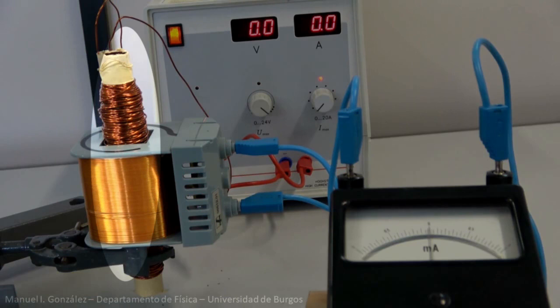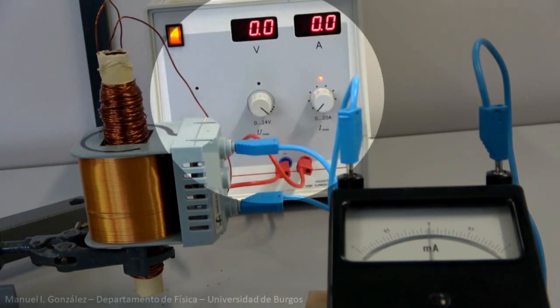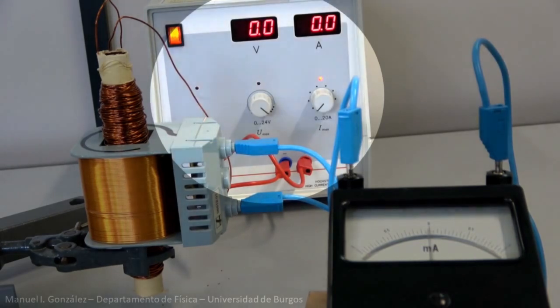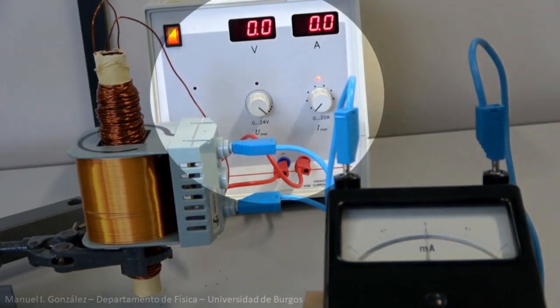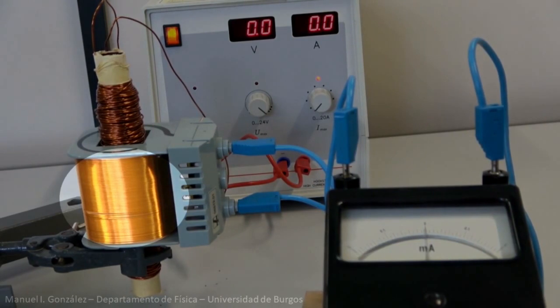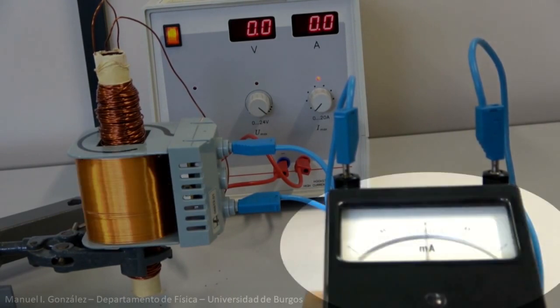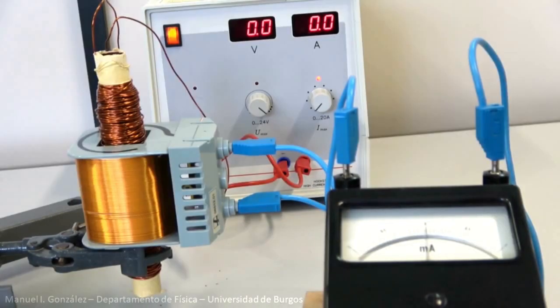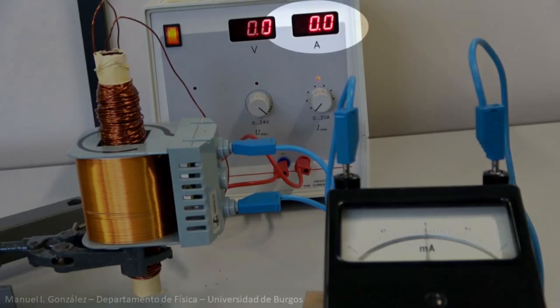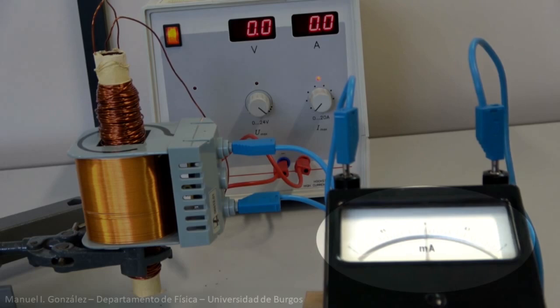This coil plays the role of the central solenoid. With this generator, we can vary the current carried by the coil. This second coil is somewhat like our plasma. It is connected to this ammeter. Let's look at the current readings on this scale, and on this one.